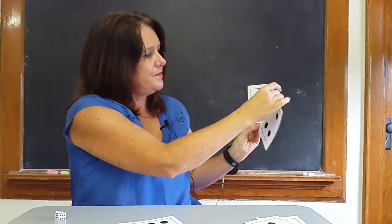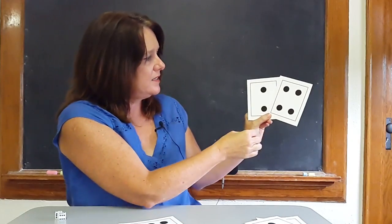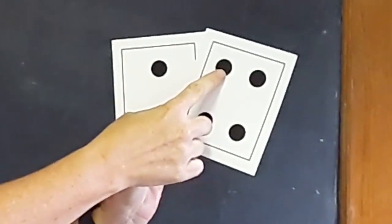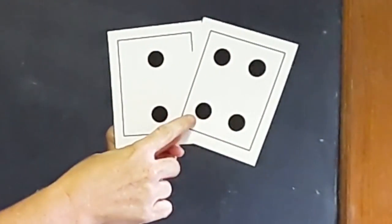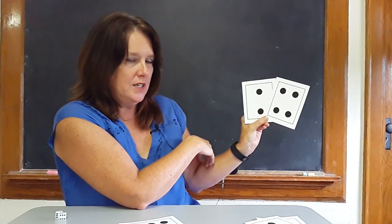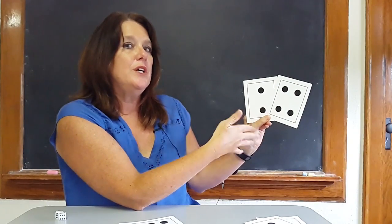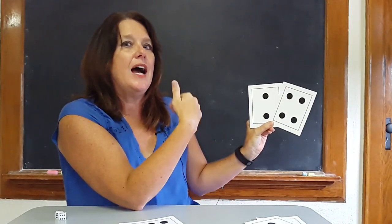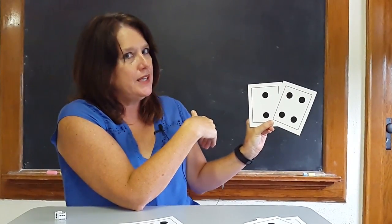Let's try that strategy again. Boys and girls, here are two more cards. Let's count the dots: one, two, three, four, five, six. Can we count that faster? Can we do that job any quicker? Hopefully they're going to say we could count on. If they do not, then I would say, remember, we can count on.